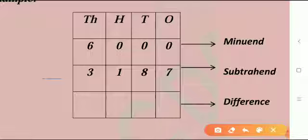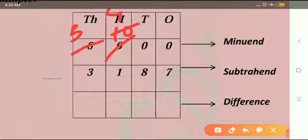Ten tens and zero ones is further equal to nine tens and ten ones. Cross out six in the thousands column and write five, then write ten in the hundreds column. Now cross out ten in the hundreds column and write nine. Now cross out ten in the tens column and write nine.